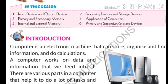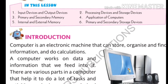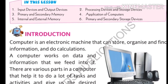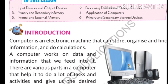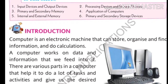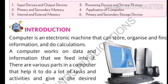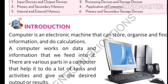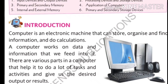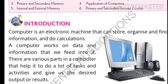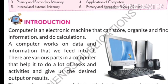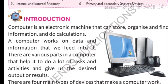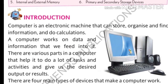But first of all, we should know what is a computer. A computer is an electronic machine that makes our work easy and fast. Or we can say a computer is an electronic machine that can store, organize and find information and do calculations. We can store many things on a computer like pictures, songs, videos, movies, games, etc. And we can find information on different topics by using the internet, and the computer can do calculations for us.